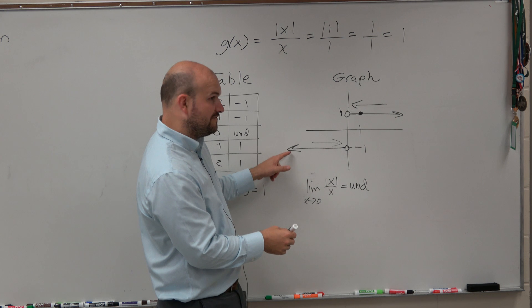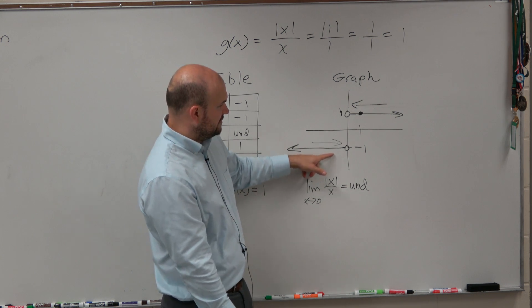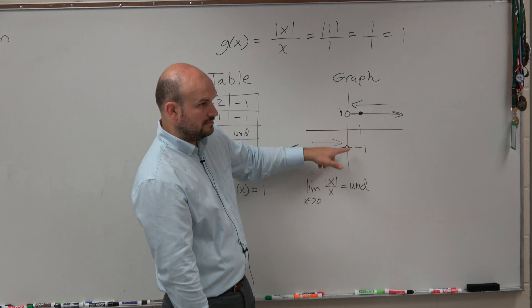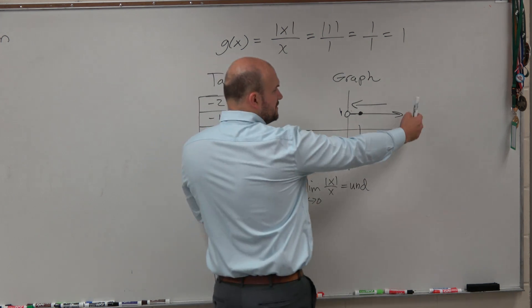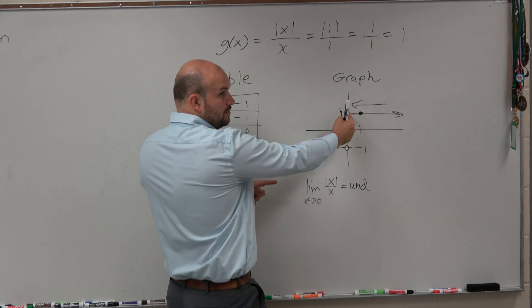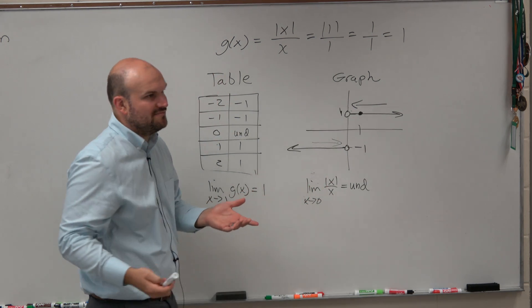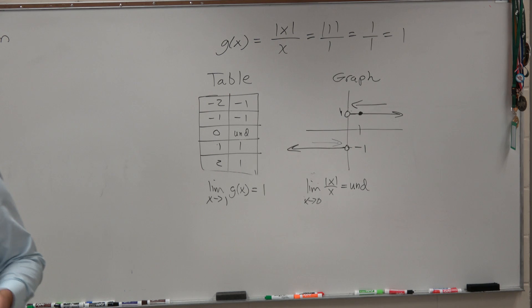So as we're going from the left, follow this graph to the left. It stops at what value? Negative 1. And as you approach from the right, it stops at what value? 1. Well, 1 and negative 1 are not the same. So they are not approaching the same value. So therefore the limit does not exist.